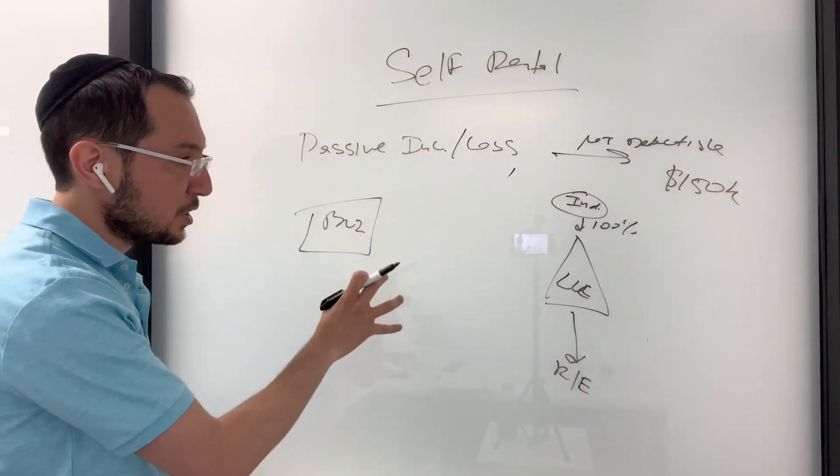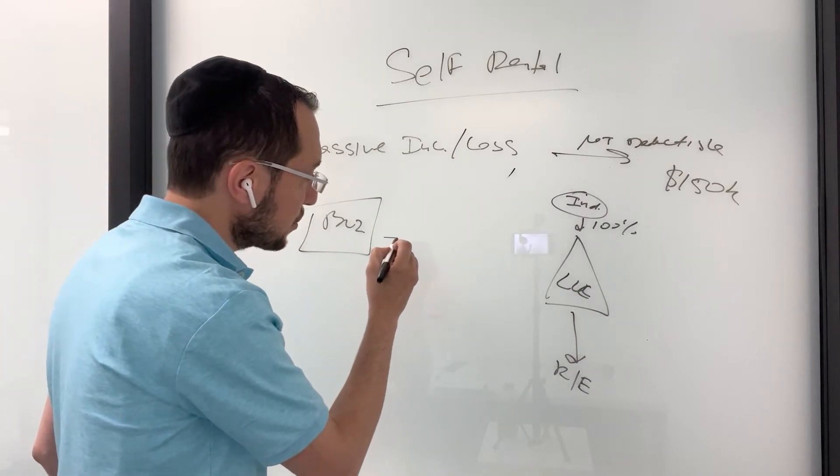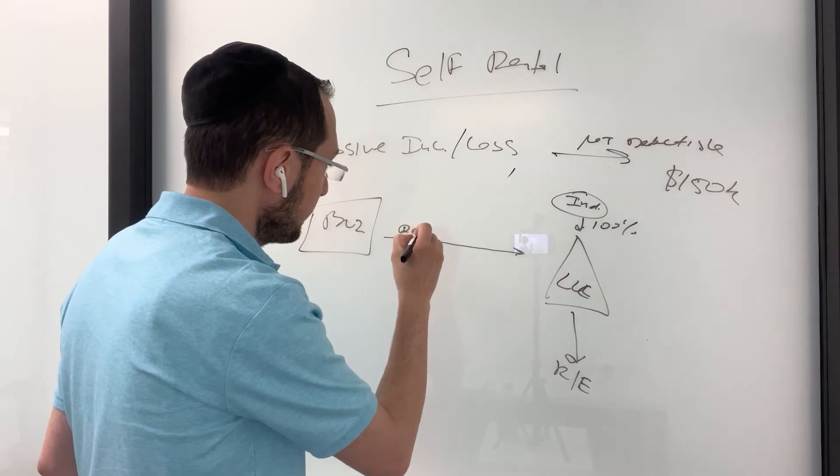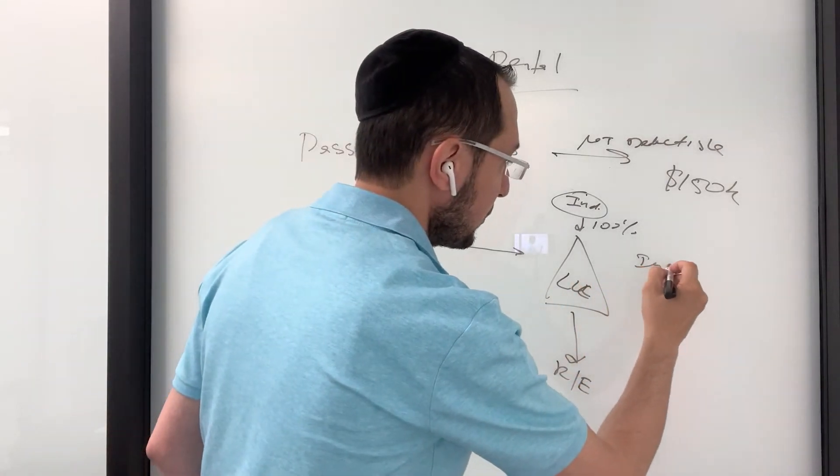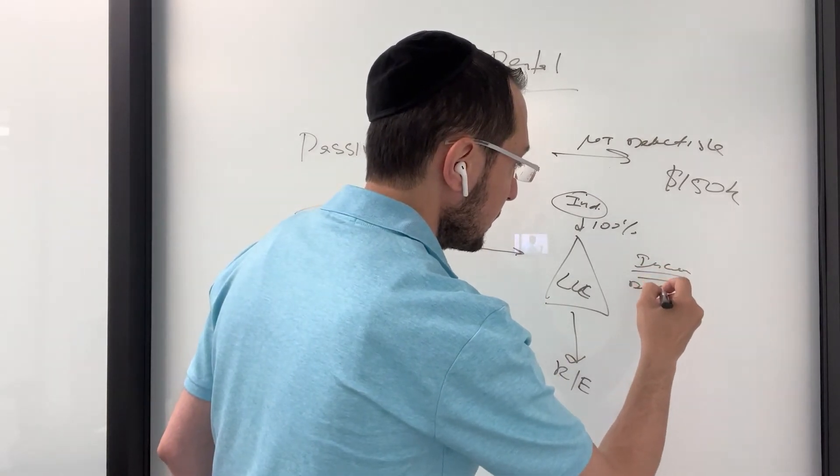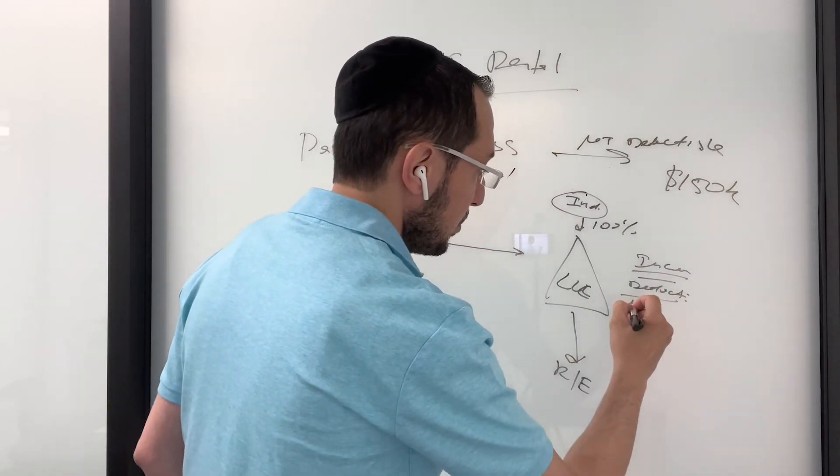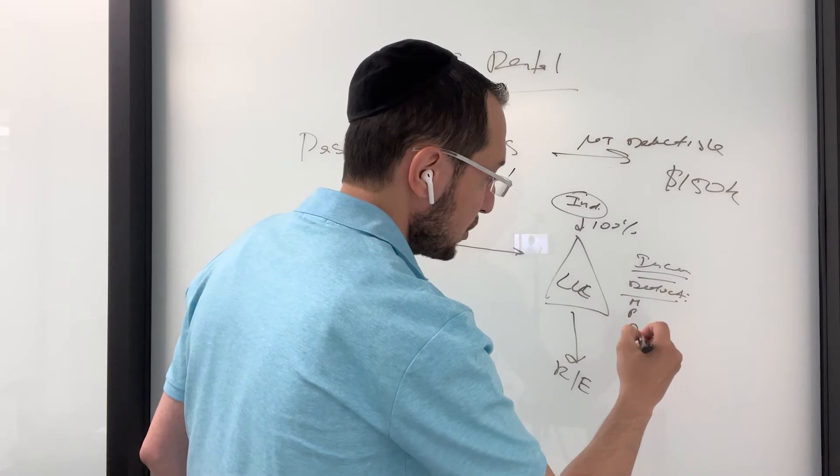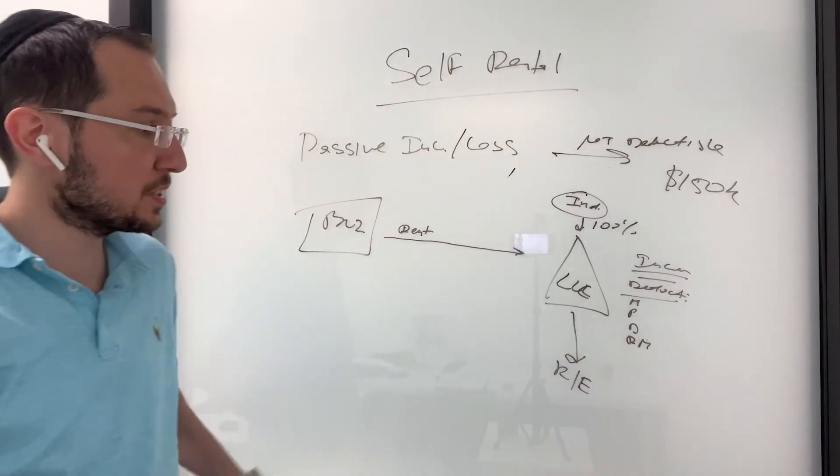So what's going to happen is that the business is going to use the space, and the business is going to pay rent. LLC is going to report the rent as an income and then take deductions. It's going to take mortgage interest and property taxes. We're going to take depreciation, repairs and maintenance, all of those expenses.